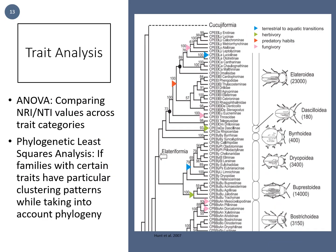To determine if certain traits were more clustered than others, an ANOVA was performed comparing the NRI and NTI values across trait categories. A phylogenetic generalized least squares analysis was also performed to determine if families with certain traits have particular clustering patterns while taking into account the whole phylogeny. The phylogeny used in this analysis was based on the literature.